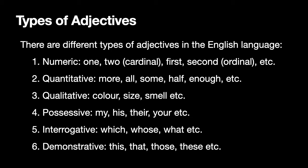The next category is quantitative adjectives, and they show the quantity of the noun that they are describing. More, all, some, half, enough, etc. — these are examples of quantitative adjectives. Then there are also qualitative adjectives which show the color, size, smell, etc. of the noun. So a blue bag, a big bag, a nice smell — those kinds of things that refer to any quality of that noun.